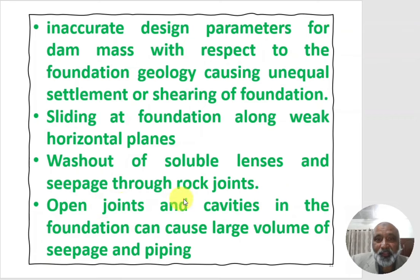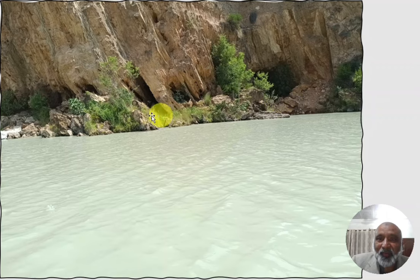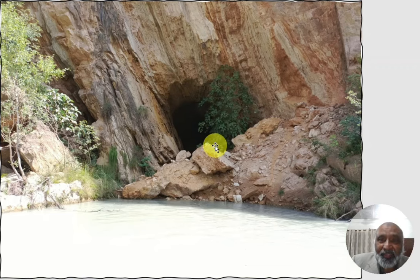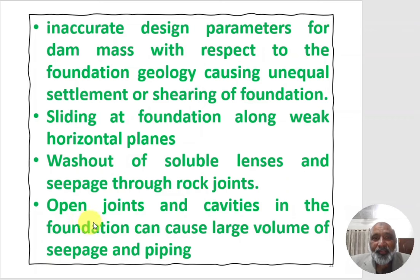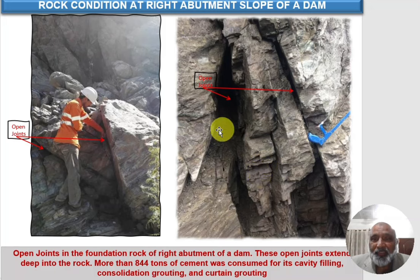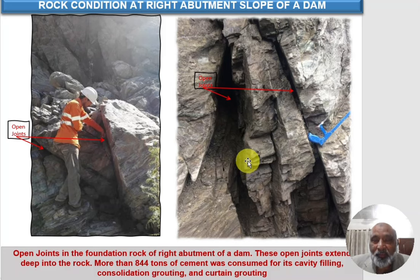Washout of soluble lenses and seepage through rock joints is another factor. Washable material can be washed out, leaving gaps and cavities in the rock. Open joints and cavities in the foundation can cause large volumes of seepage and piping. For example, at the right abutment of one dam, more than 850 tons of cement — along with cement, water, and sand — was used to fill cavities for consolidation grouting and cavity grouting.